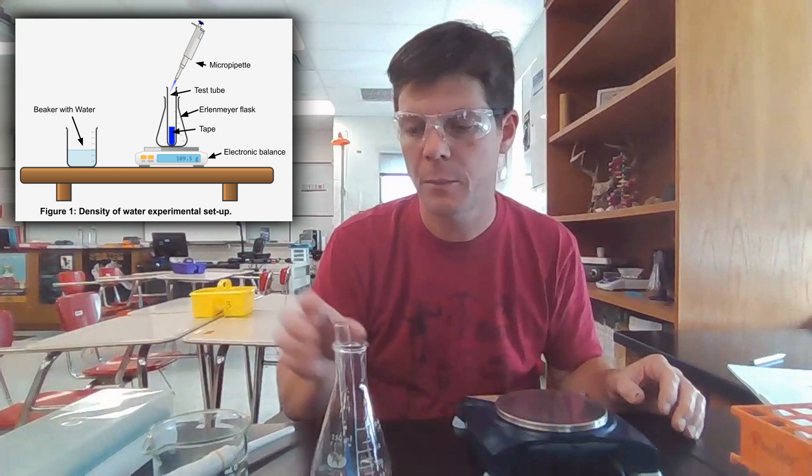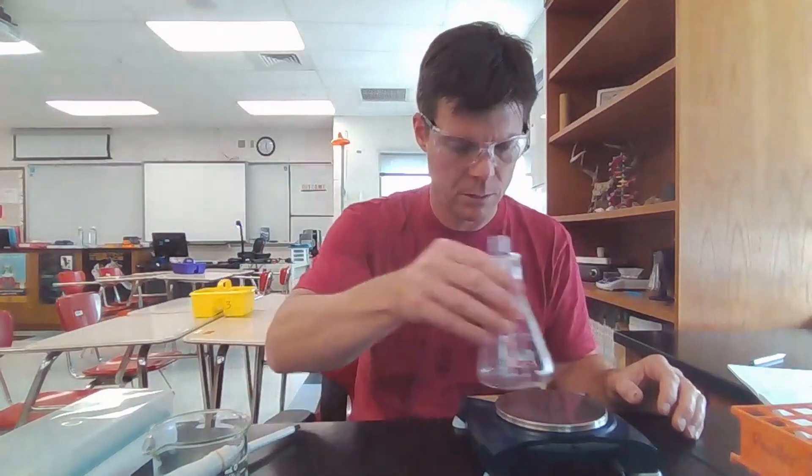First, let's determine the mass of the test tube and Erlenmeyer flask. 109.5 grams. The reason to measure the mass of the Erlenmeyer flask and test tube empty is so that we can later compare that mass to the new mass that happens when we're adding liquid into the test tube.